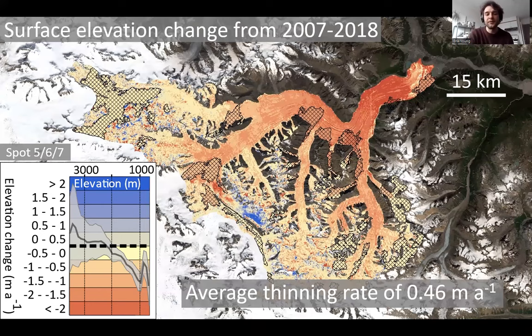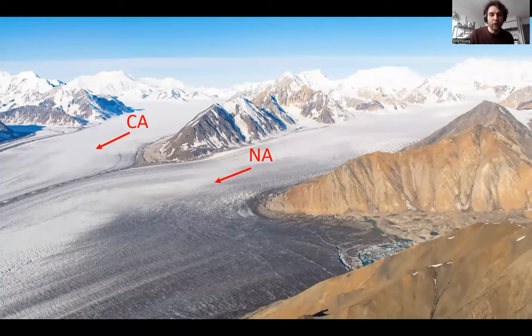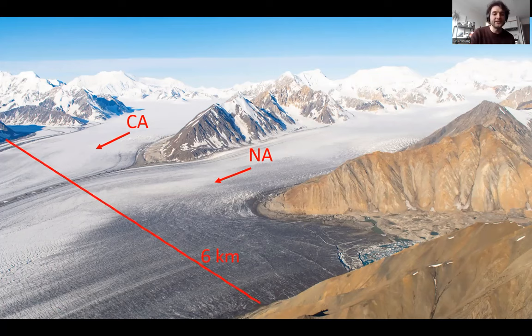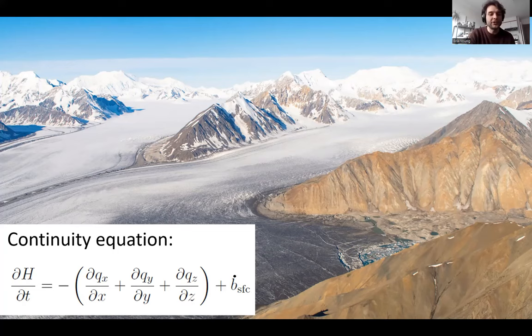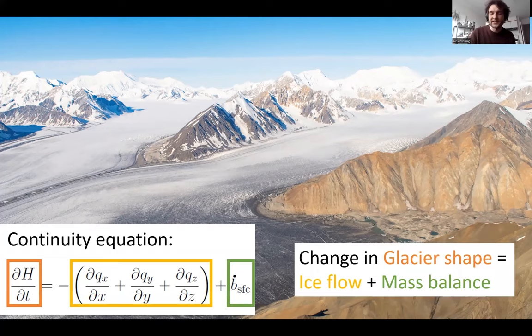Zooming in, we've calculated an average thinning rate of nearly half a meter per year — the Kaskawalsh is actively losing mass at a very alarming rate. If you were standing in the northern valleys looking down at it, the ice is nearly six kilometers in width and nearly a kilometer thick — a lot of ice trapped in just one valley. As glaciologists we can determine how a glacier will evolve using a continuity equation: any change in glacier shape through time depends on the combination of ice flow and mass balance — gravity and climate together shape the glacier.